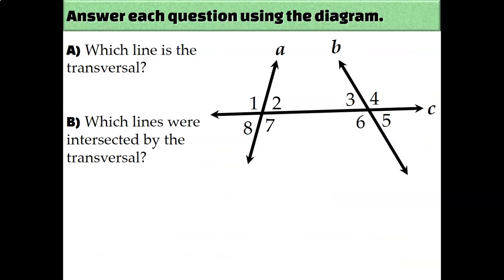Let's look at an example and identify transversals, lines, and angles. Which line is the transversal — A, B, or C? It's line C, because line C is the one that intersects the other two lines. Which means lines A and B are the lines that were intersected by the transversal.